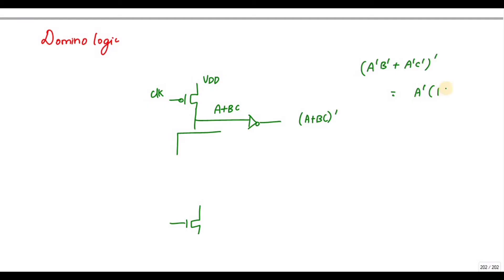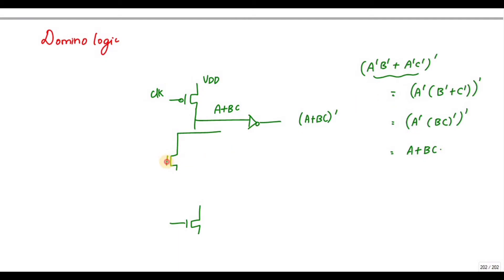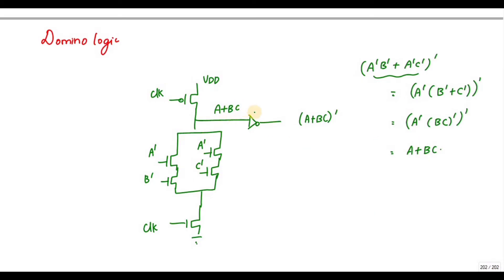Taking the whole bar of A̅B̅ + A̅C̅ gives (A̅B̅ + A̅C̅)̄. Working this out: I need to connect A̅ in series with (B̅ and C̅ in parallel). If I take the whole bar of A̅(B̅ + C̅), I will get A + BC, and then taking the inversion I will get (A + BC)̄, which is the required output.